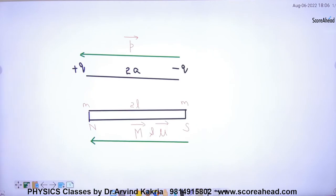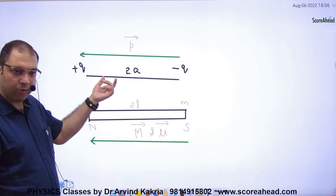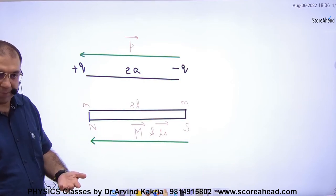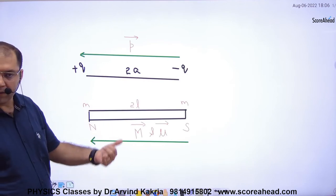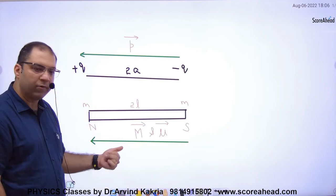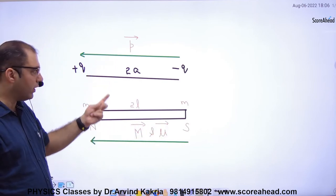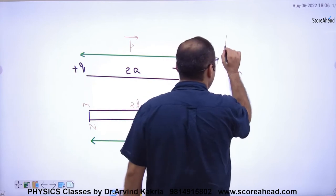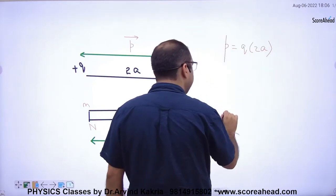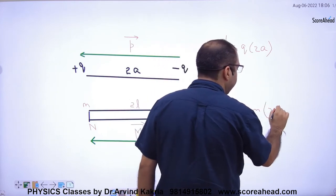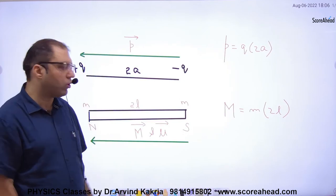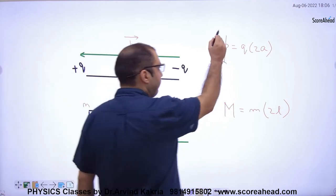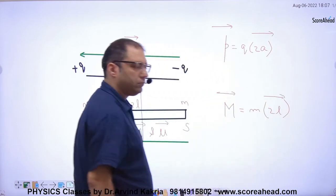So to summarize: electric dipole has plus Q and minus Q separated by 2A; magnetic dipole has north and south separated by 2L. Q is replaced by small M. Electric dipole moment direction is negative to positive; magnetic dipole moment direction is south to north. Symbol for electric dipole moment is P; for magnetic dipole moment it is capital M or mu. Formula: electric dipole moment P equals Q times 2A; magnetic dipole moment capital M equals small m times 2L. Both are vector quantities.